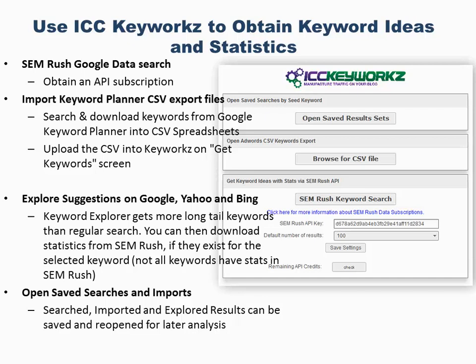There is another way to get keywords for which you do not need an AdWords account or an SEMrush account — that is to use what we call the keyword explorer screen to explore suggestions on Google, Yahoo, and Bing. The keyword explorer gives you a lot more long-tail keywords than a regular search, even the keyword planner. However, they do not have statistics attached to them. If you do have the SEMrush API subscription, you can download statistics right into your explored keywords, though not all of those keywords have data in SEMrush's database.